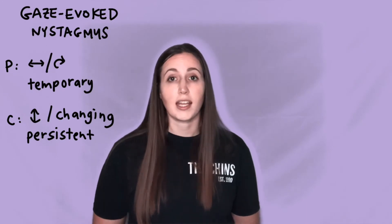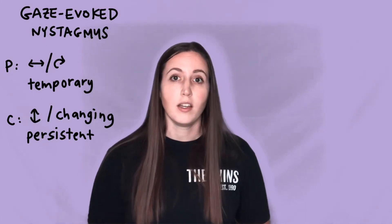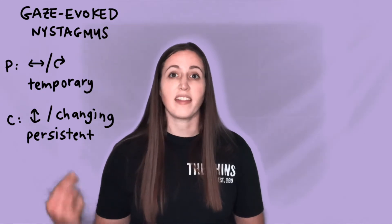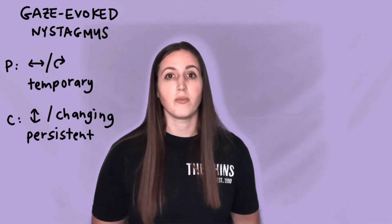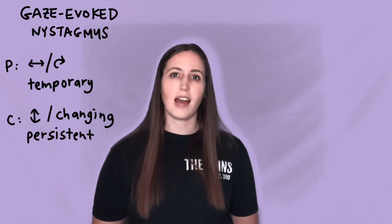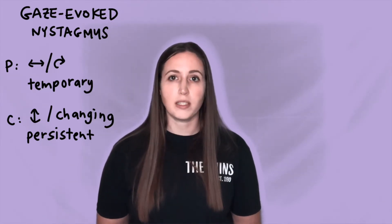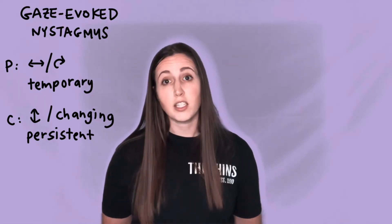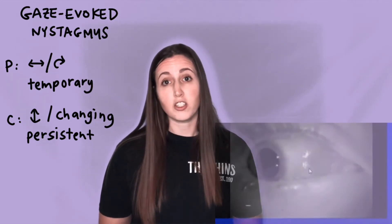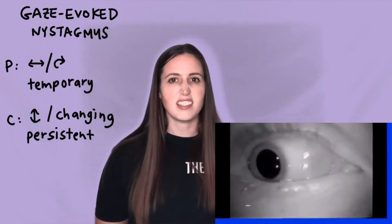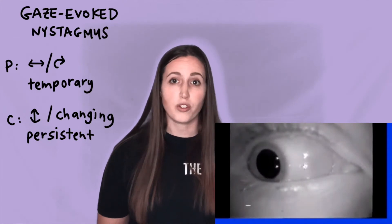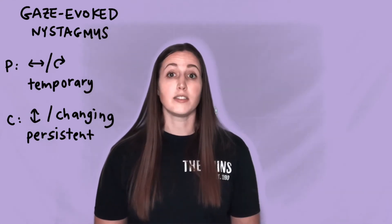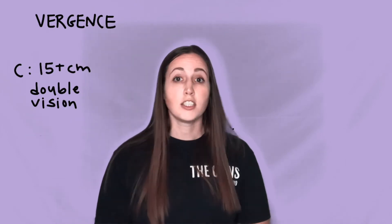Next, you want to check gaze evoked nystagmus. Basically, you'll have the patient focus on a pen tip at the end range of motion on each side. It's normal to have one to two beats of nystagmus at the end range of motion, but if it continues, there could be a lesion. Peripherally, if the nystagmus is torsional or horizontal, and central if the nystagmus is vertical or direction changing.